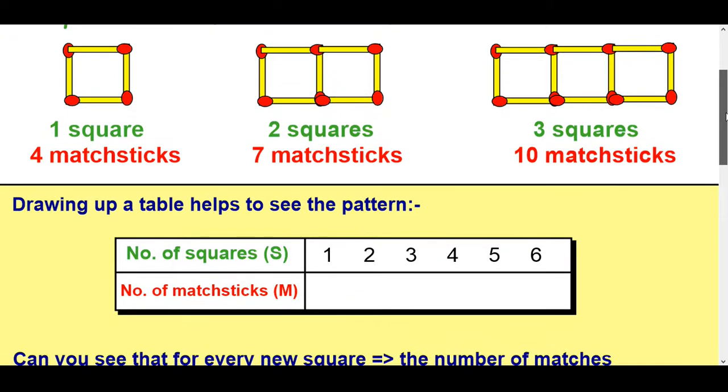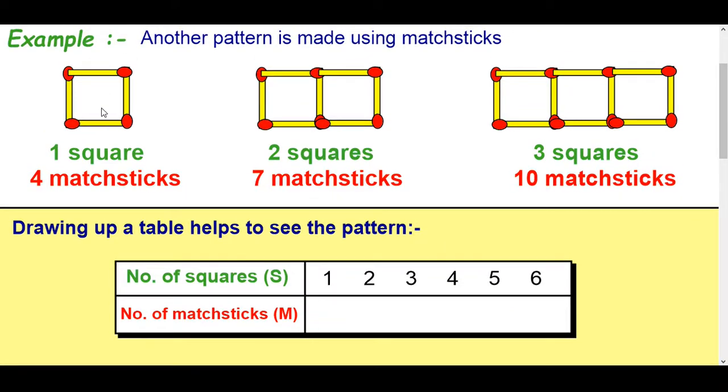We'll have a look at this pattern first. So this is a pattern made up of matchsticks. We've got one square uses four matchsticks. Now before we made two squares we just used eight matchsticks and it's quite simple, but this time the two squares are joined.